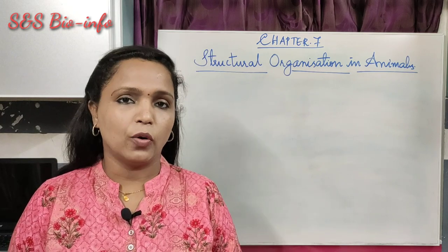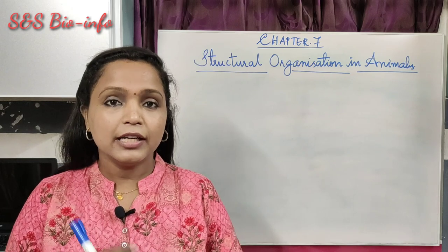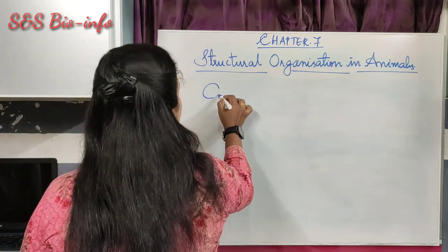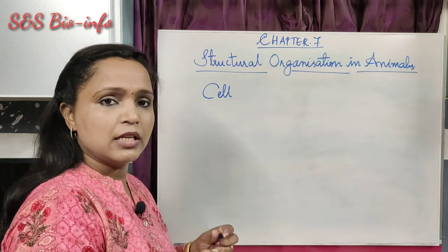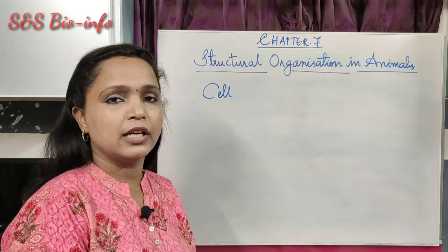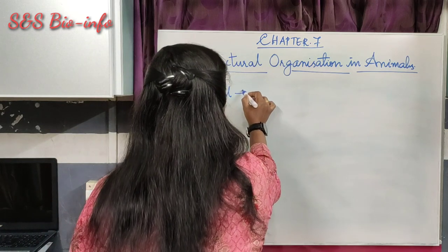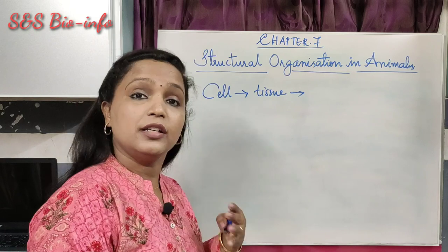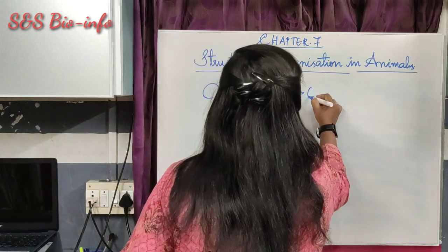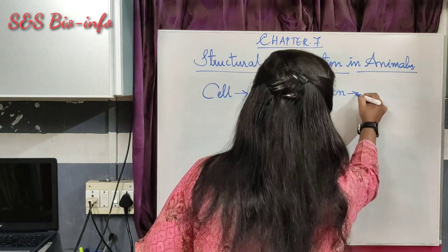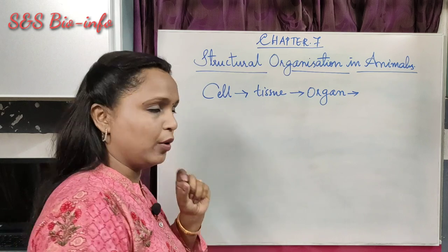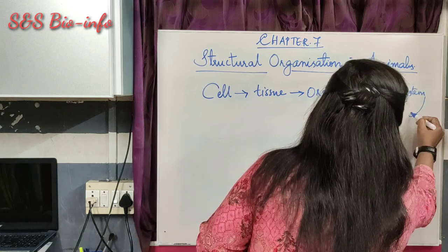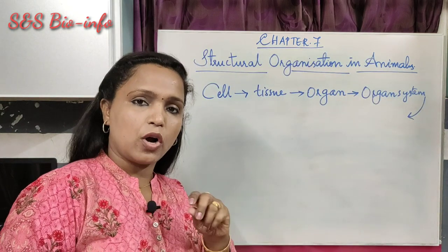When we think about the body organization of all living organisms, it starts from a single basic unit which is called a cell. So cell is the basic unit of life. Many similar kinds of cells together form a tissue. Many tissues together form an organ. Many organs together join to form an organ system. All types of organ systems constitute an organism.